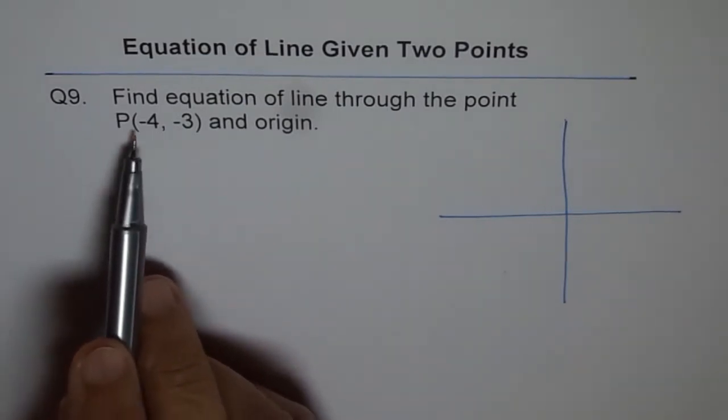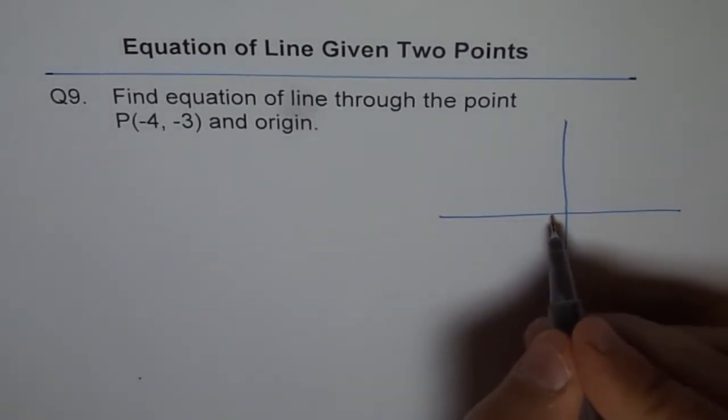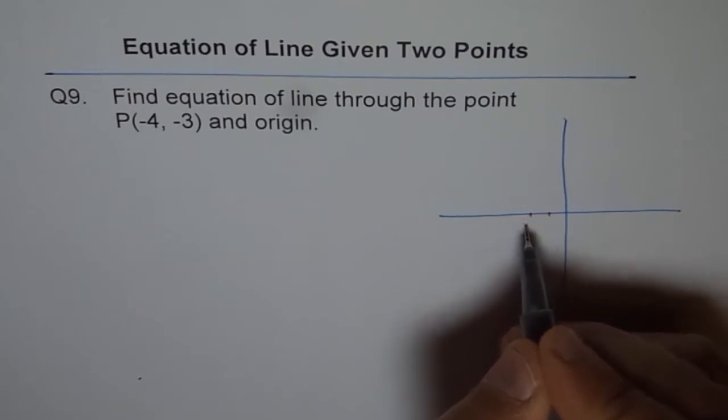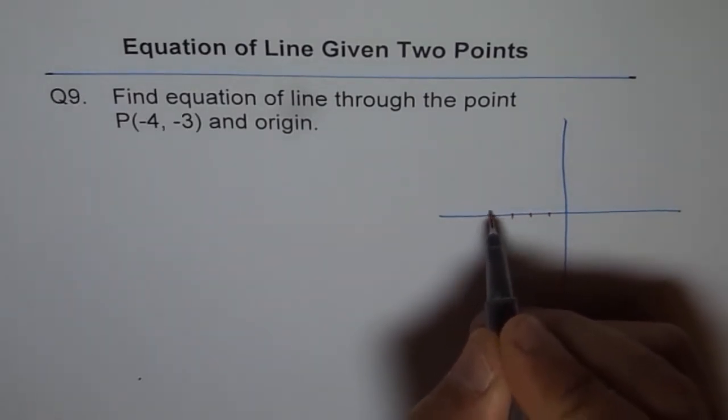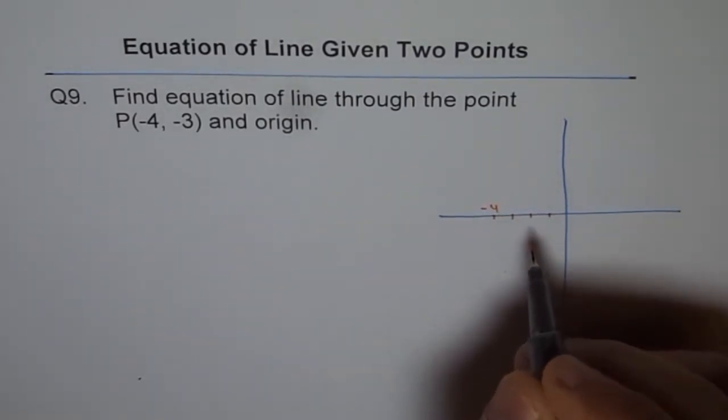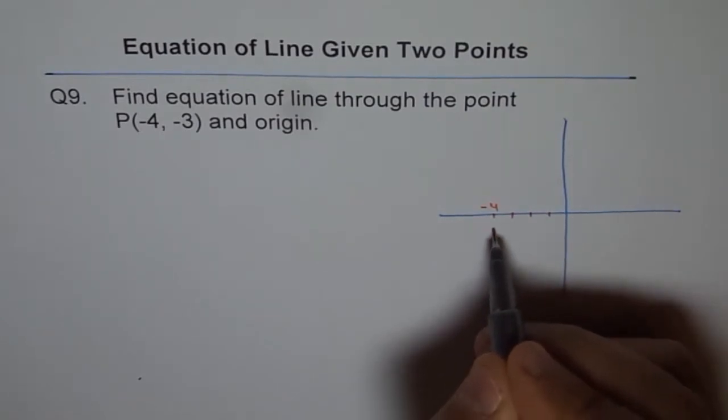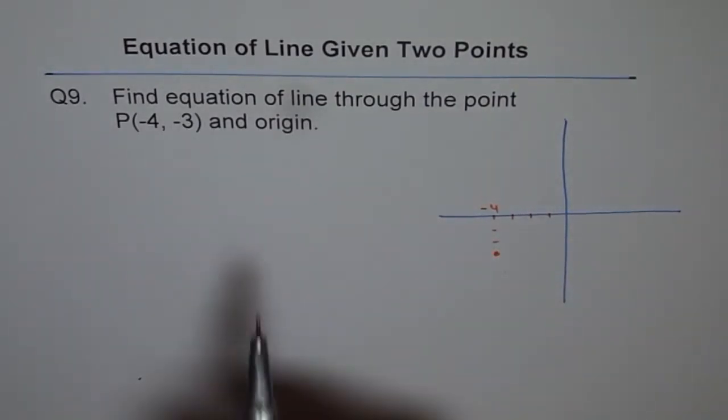Point P is (-4, -3). So we will go 1, 2, 3, 4. That is -4, correct? And -3 will be down. So you see 1, 2, 3. So that is (-4, -3). And where is origin?